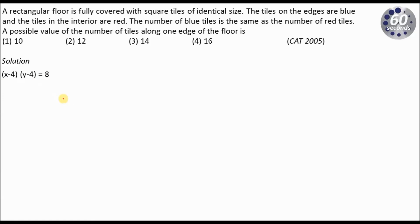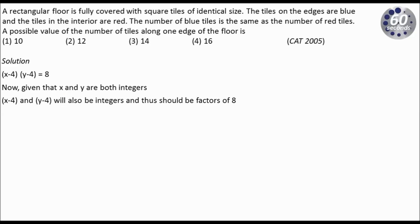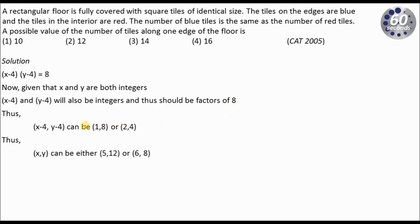X and Y are integers, so X minus 4 and Y minus 4 should be factors of 8. I can write 8 as a product of two numbers in two ways: either 1 and 8, or 2 and 4. If X minus 4 and Y minus 4 are 1 and 8, then X equals 5 and Y equals 12. Similarly, if X minus 4 and Y minus 4 are 2 and 4, I get X equals 6 and Y equals 8.